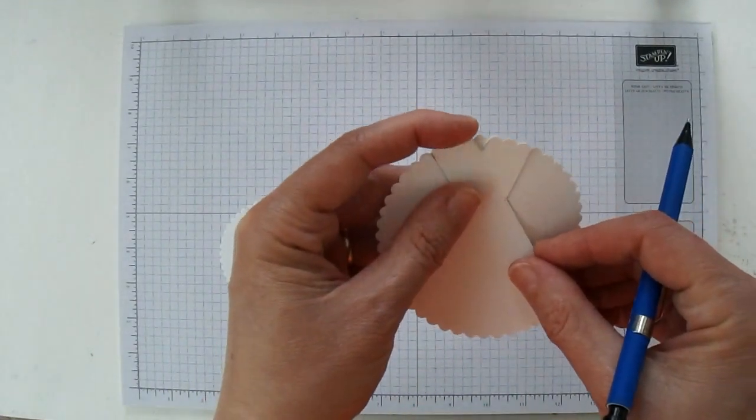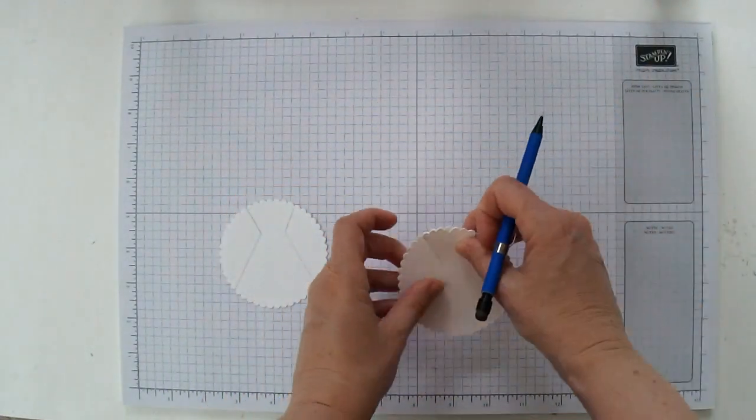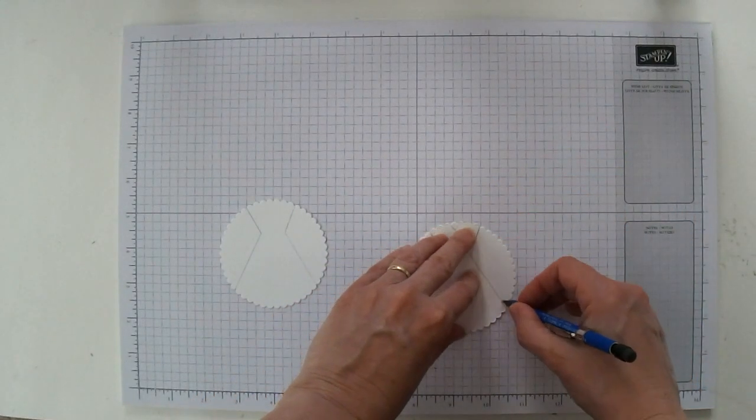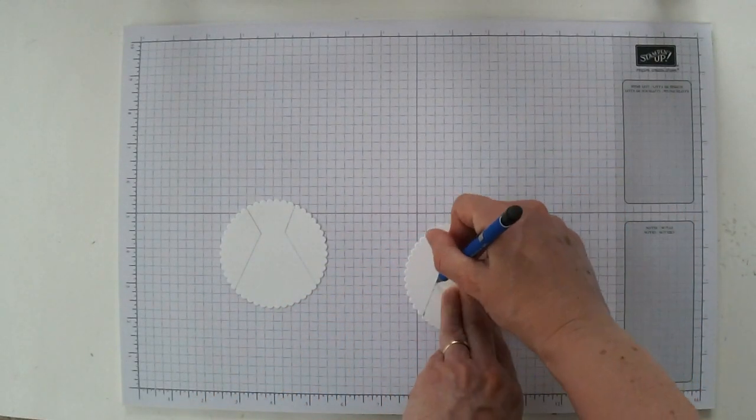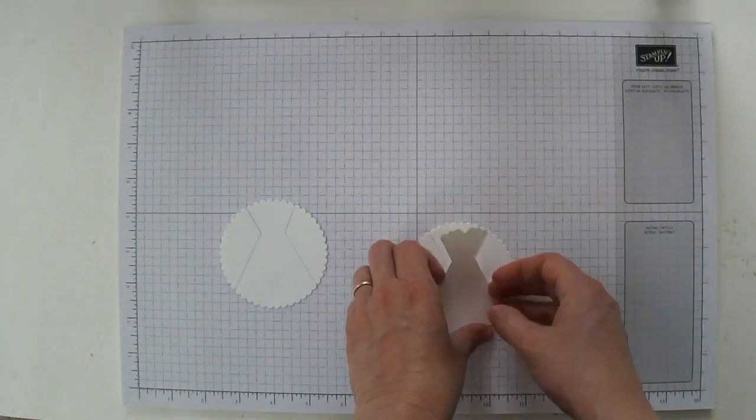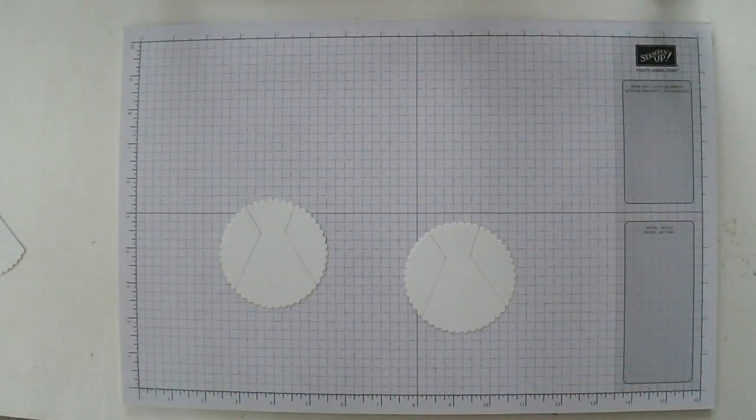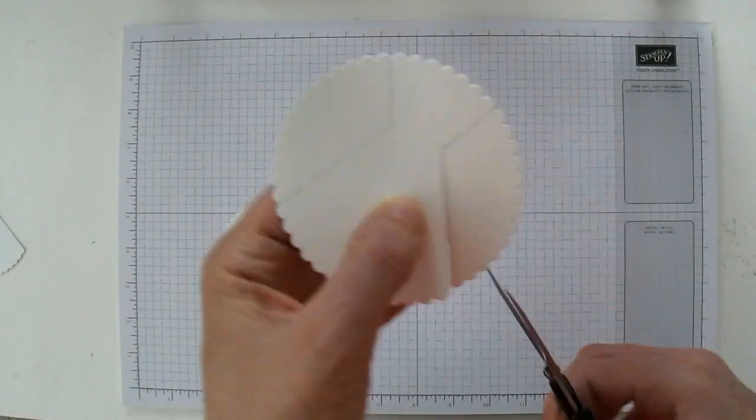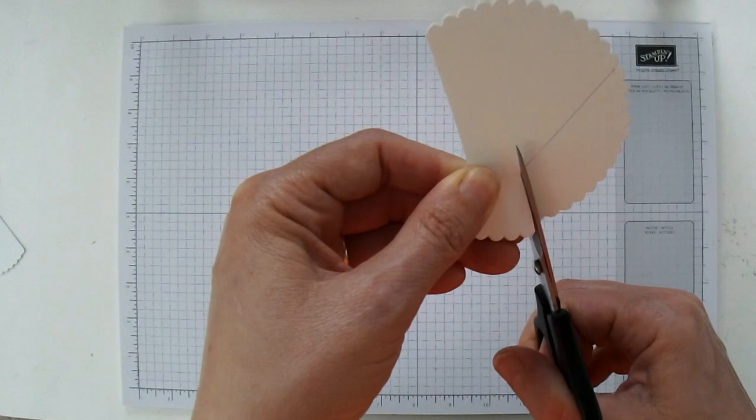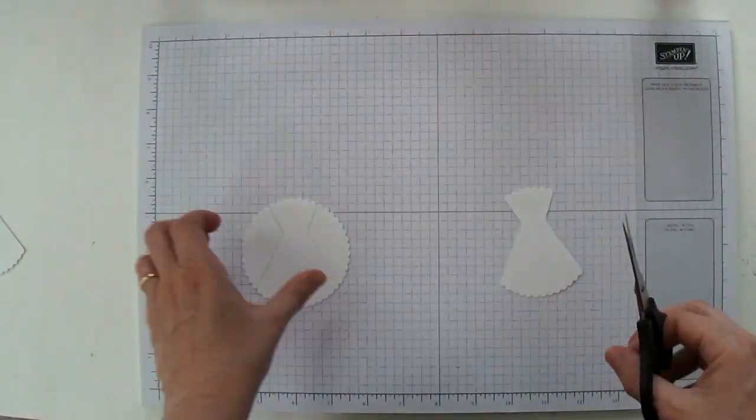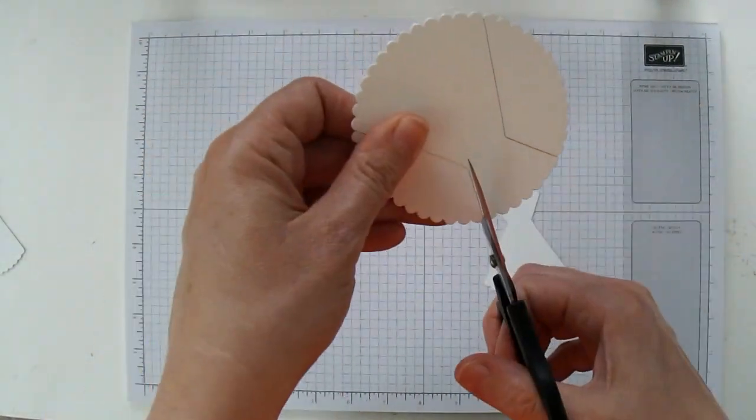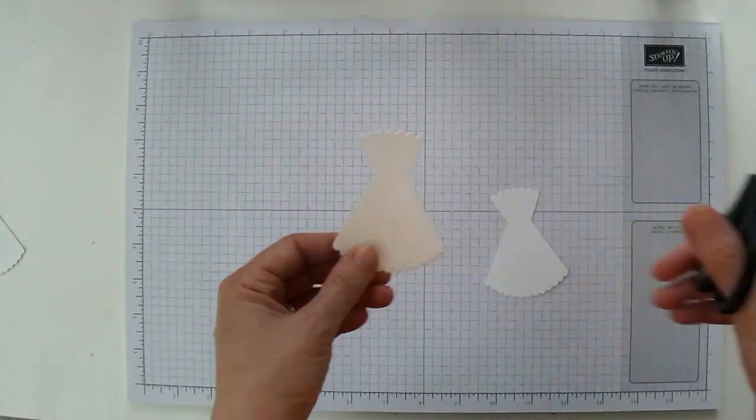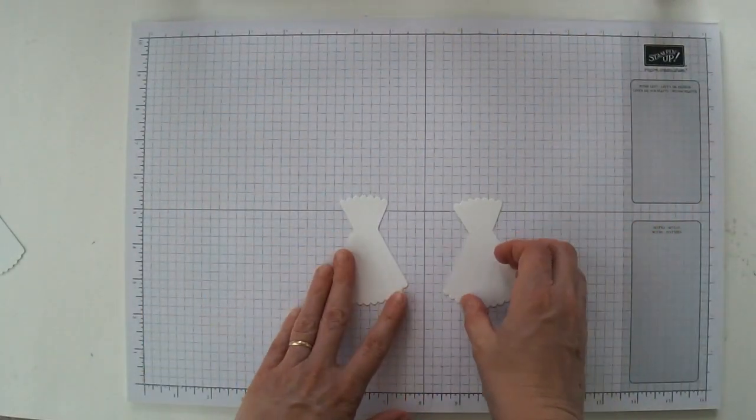And then I'm going to do the same thing with the other scalloped circle. Just make sure it's lined up and then all you have to do is cut along the pencil line. And there you go. You've got your two dresses.